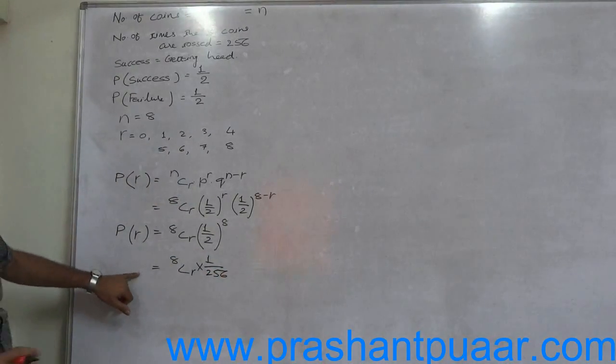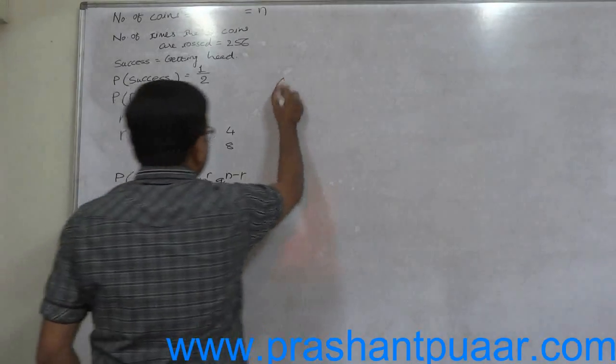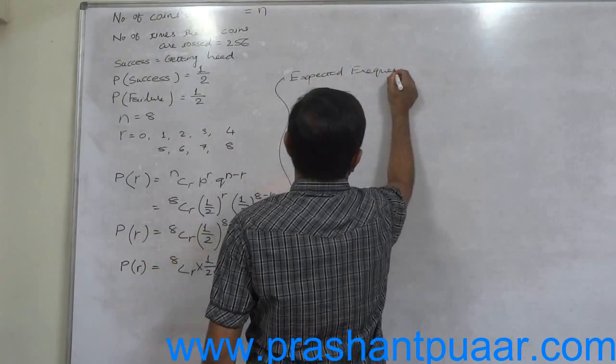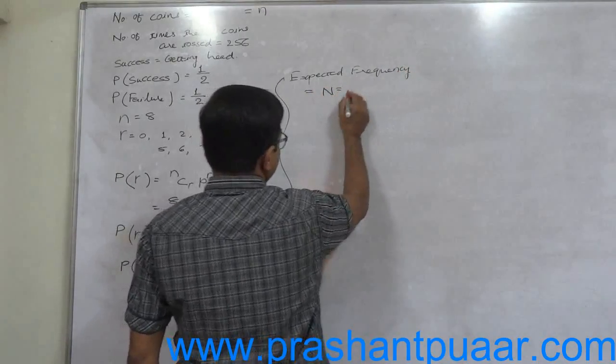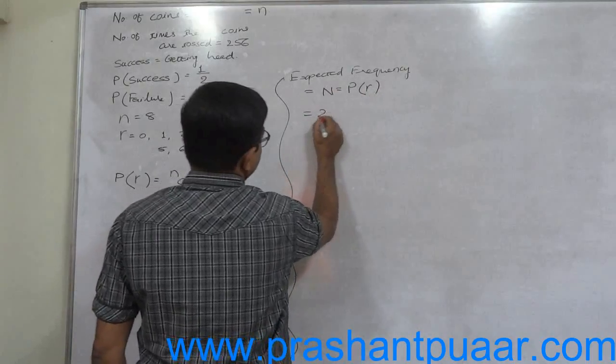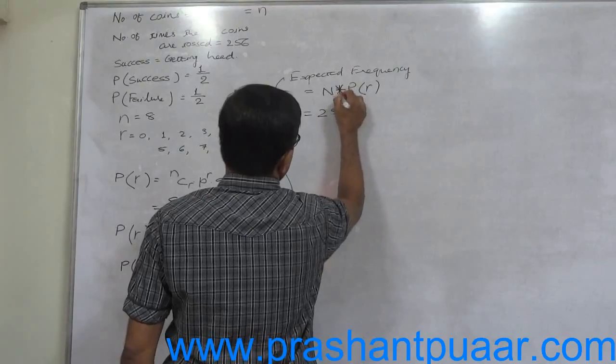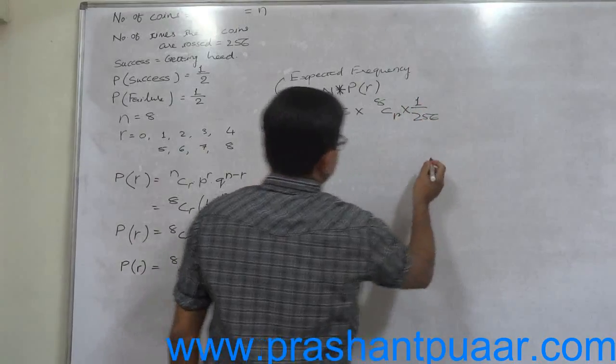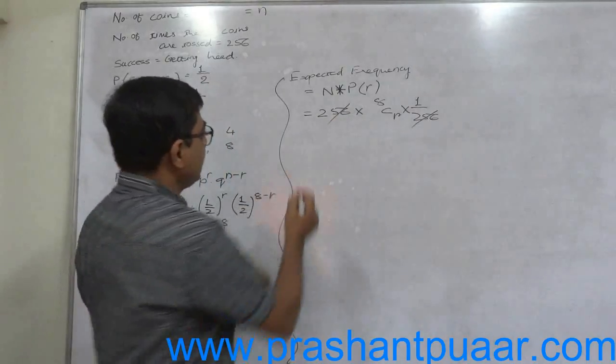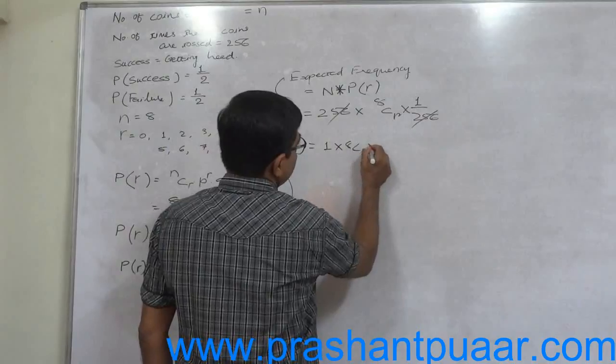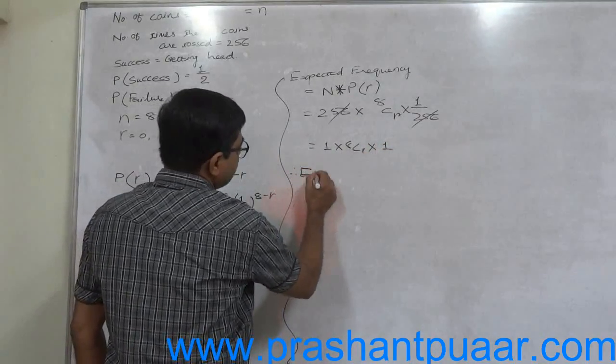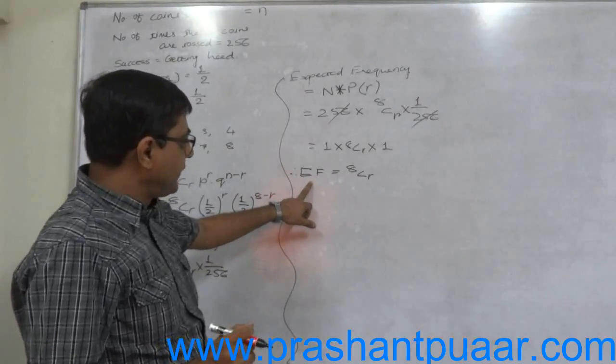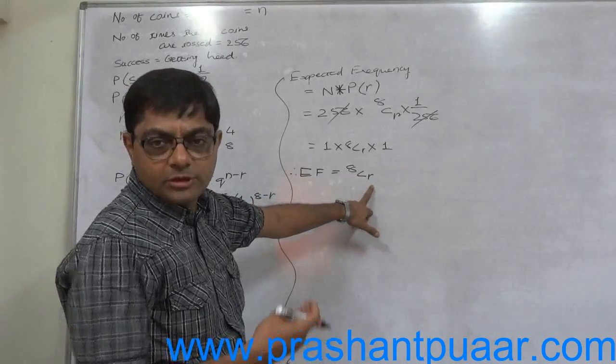This is probability of any value of R. Now we know that expected frequency equals to number of repetitions of the experiment into probability of any particular result. That means ultimately it is 256 into 8CR into 1 by 256. And we can cancel 256 and 256. So ultimately expected frequency is equivalent to 8CR.